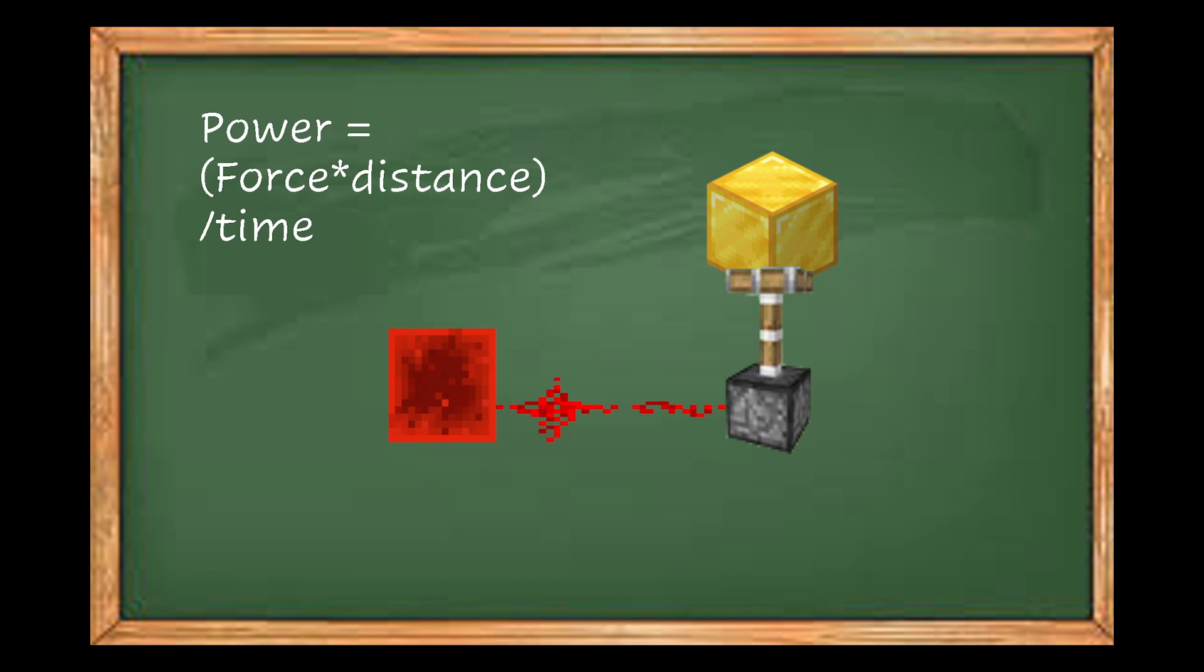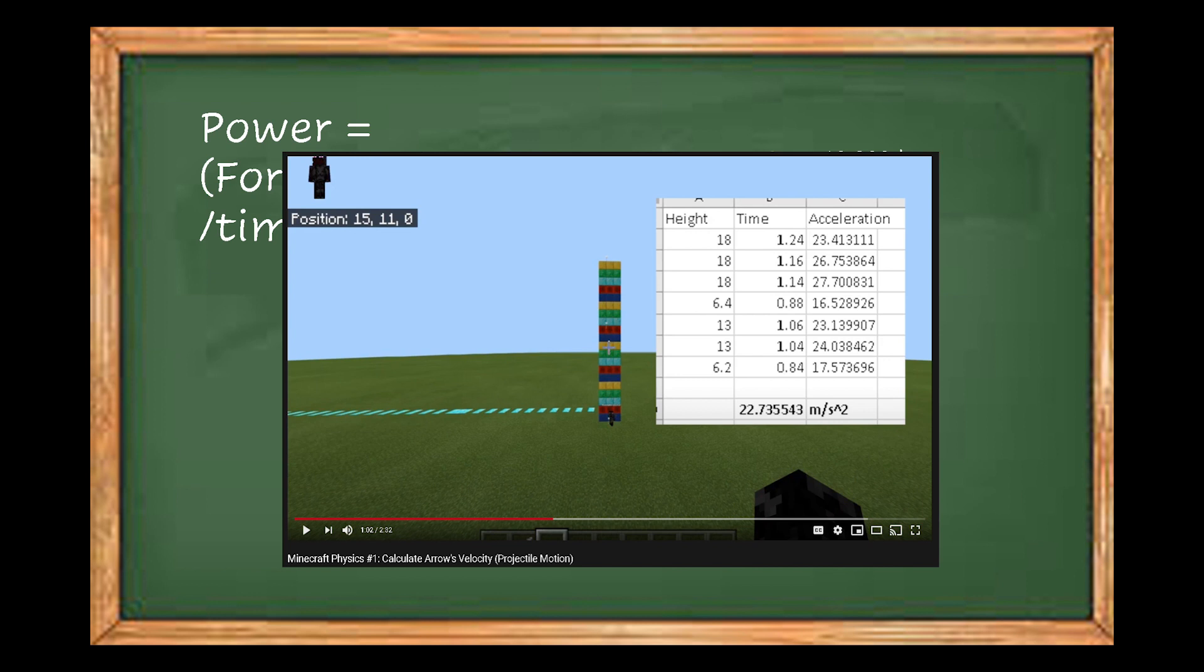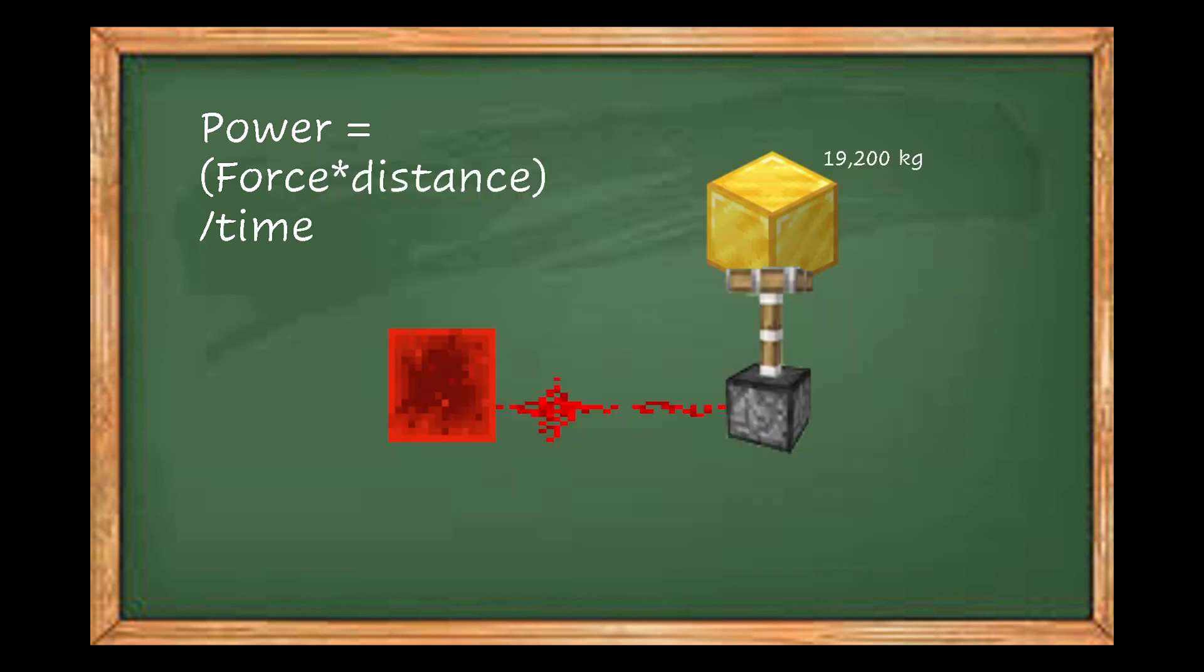The gold block weighs about 19.2 thousand kilograms. We can multiply this by the acceleration on our Minecraft world, which we calculated as 20 meters per second squared if you remember from my arrow velocity video. Be sure to watch that too if you haven't already. So the force would equate to about 384 thousand newtons.